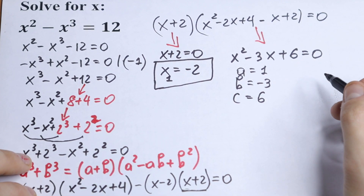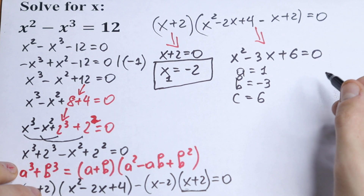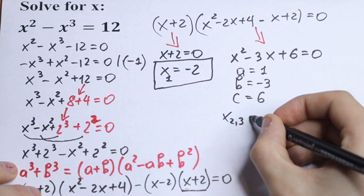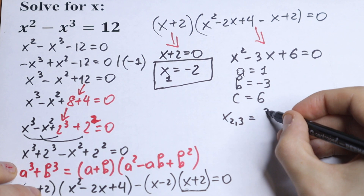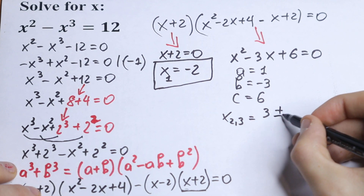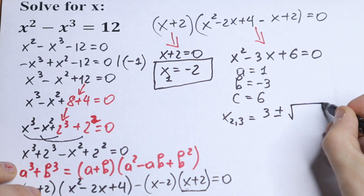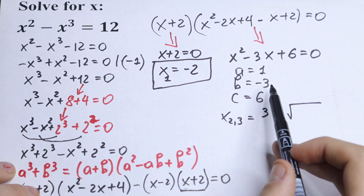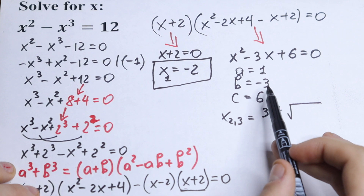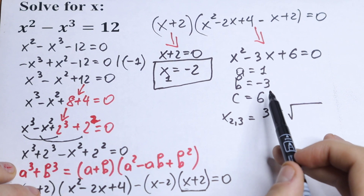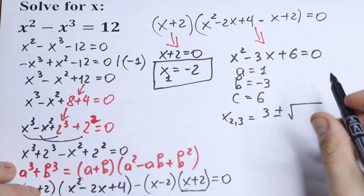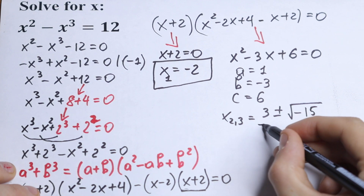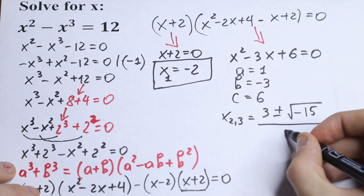Let's find x2 and x3. So x2 and x3 equal to minus b, which is 3, plus or minus the square root of b squared minus 4ac. So we will have 9 minus 24, which is minus 15, over 2a, over 2.